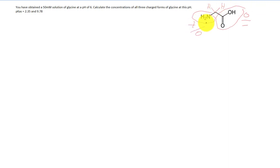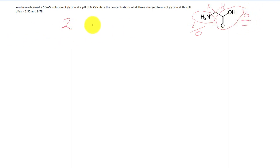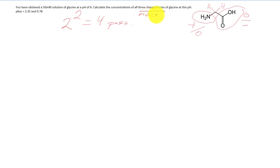For glycine, the important titratable pieces are just the amino and carboxy ends. We need to calculate the fraction in all three charged forms. For any amino acid, the number of charged forms equals the number of states for each group — two states each: positive or neutral for the amino, neutral or negative for the carboxy. With two groups at two states each, that's 2² = four possible combinations, but there are actually only three observable macroscopic charge forms.